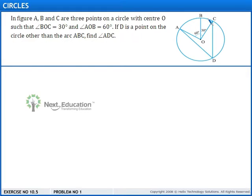In this question, we are given three points A, B, and C on a circle with center O such that angle BOC is 30 degrees and angle BOA is 60 degrees.